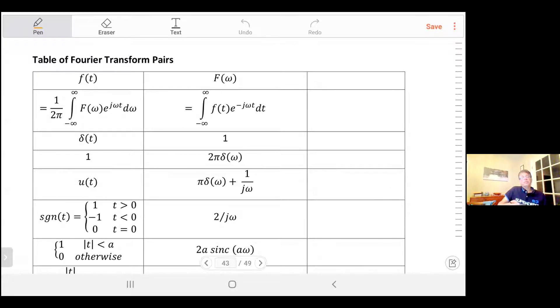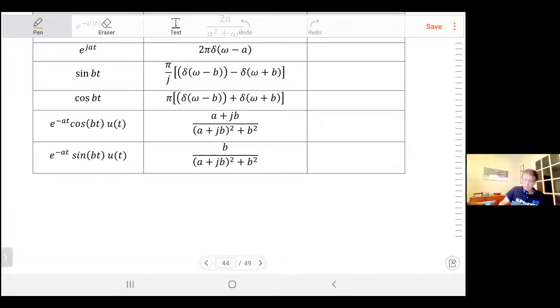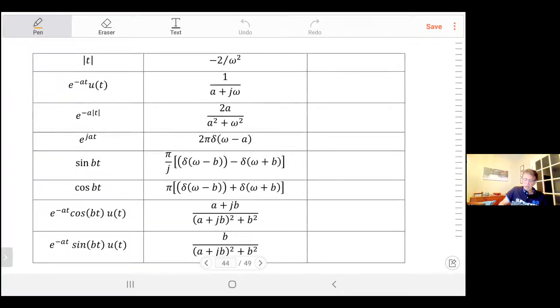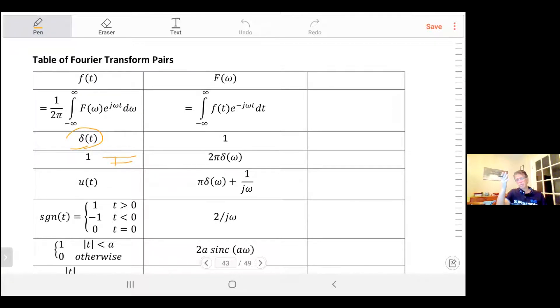They already did the Fourier transform for many common signals and put it in the table. For example, you see in the table the first one is the impulse function delta, and its Fourier transform is equal to one. If you have a signal which is constant equal to one all the time from minus infinity to infinity, the corresponding transform would be 2π times delta of omega. There are many functions in this table.